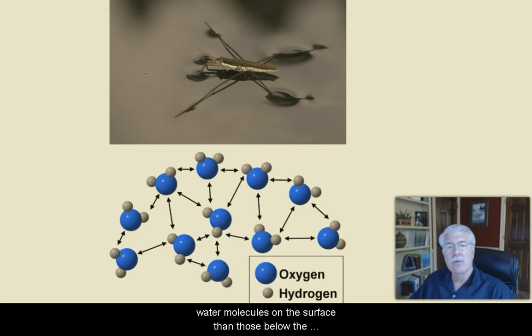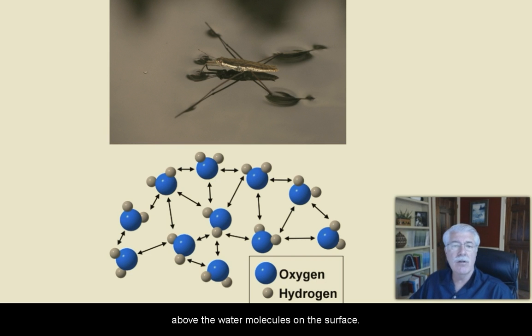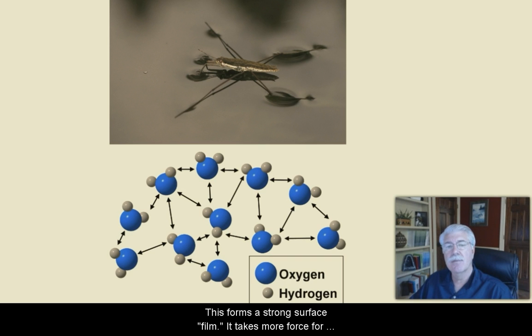The water molecules at the surface are more strongly attracted to other water molecules on the surface than those below the surface, because there are no water molecules directly above the water molecules on top of the surface. This forms a strong surface film. It takes more force for an object to break through the surface film than to move through the water below it.